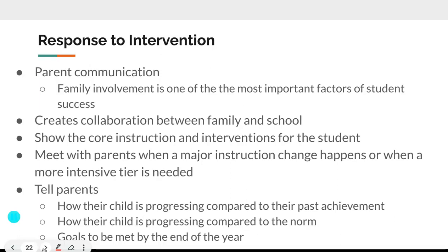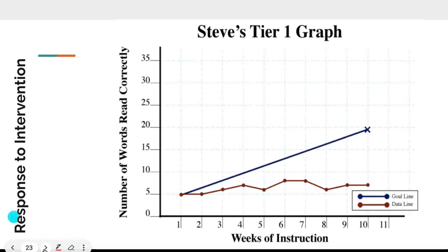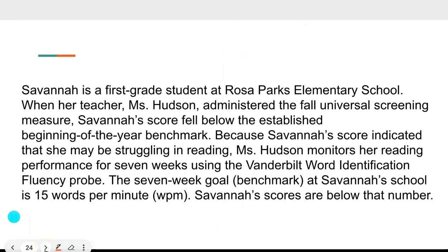Parent communication is very important — family involvement is one of the most important factors of student success and creates collaboration between parents and students. Show parents the instruction you've done, the changes you've made, and changes in the student's progress. Meet with parents when a major instructional change happens or when a more intensive tier is needed. Tell parents how their child is progressing compared to past achievement, how they compare to the norm, and what goals you want the child to meet by year's end.